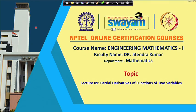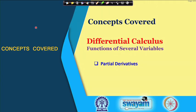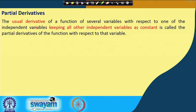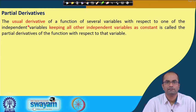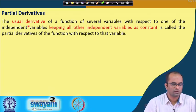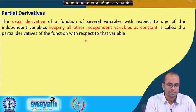Hello, welcome to the lectures on Engineering Mathematics 1. This is lecture number 9. We will be talking about partial derivatives of functions of several variables. A partial derivative is a usual derivative of a function of several variables with respect to one of the independent variables while keeping all other independent variables as constant.